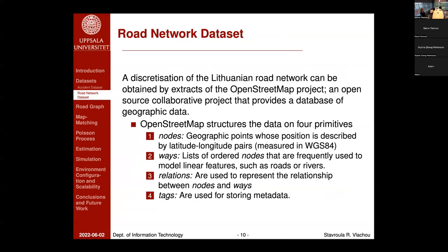The second dataset, called the road network dataset, provides a discretization of the Lithuanian road network and was obtained from OpenStreetMap, an open-source collaborative project providing a database of geographic points. This dataset consists of four main primitives: nodes, which are essentially pairs of longitude-latitude coordinates; ways, which are lists of ordered nodes used to model linear features such as rivers or roads; relations, used to represent relationships between nodes and ways; and tags, used for storing metadata.